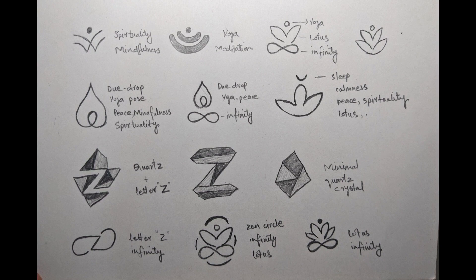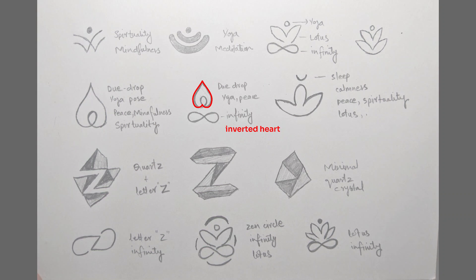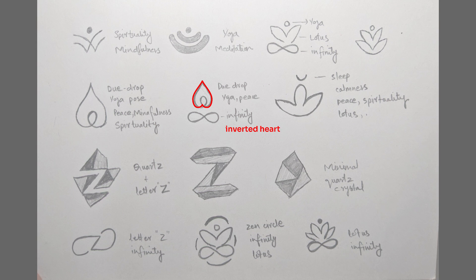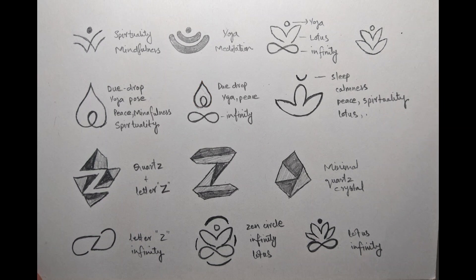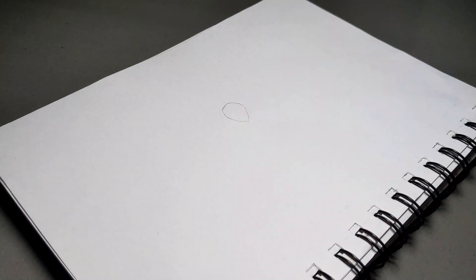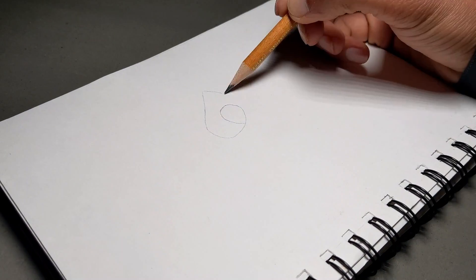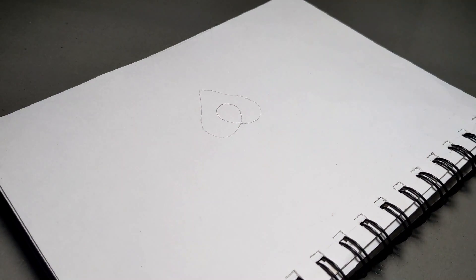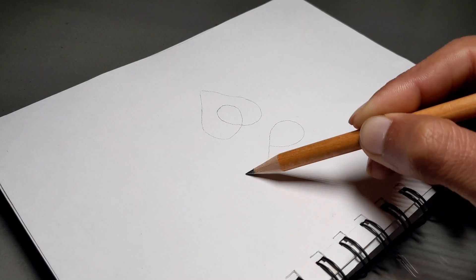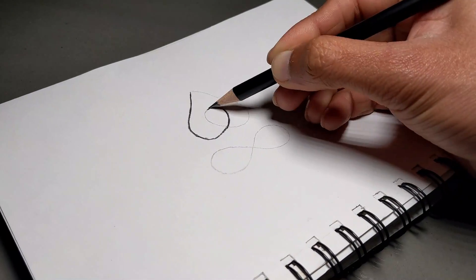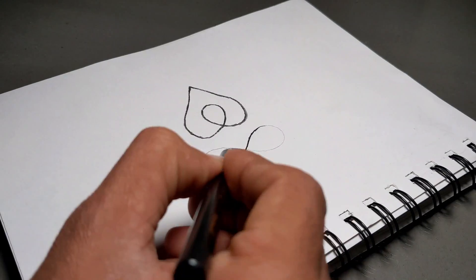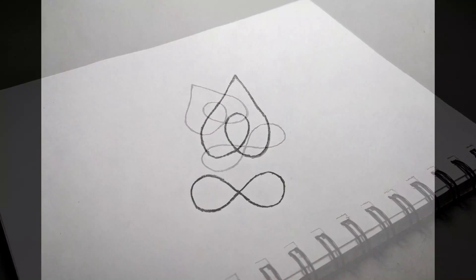We are done with the sketching process and it's time to choose the final sketch. I really like this one because it represents a number of elements. One element that I forgot to mention is a heart — the upper part of the body represents an inverted heart that represents the law of attraction.